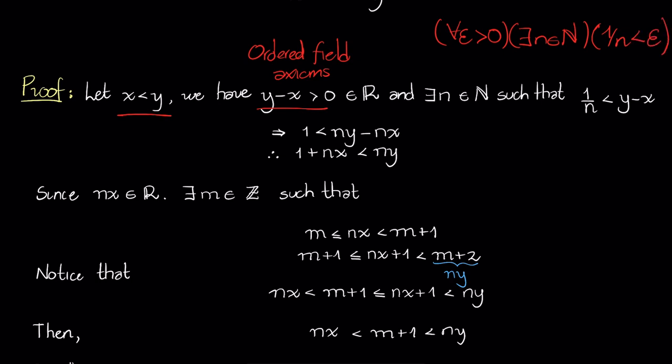So we can generalize this and say that there exists a natural number n such that 1 over n is less than y minus x. Why is this true? Because y minus x, as we have defined here, is greater than zero. We take this y minus x as our epsilon here, and we continue the proof.